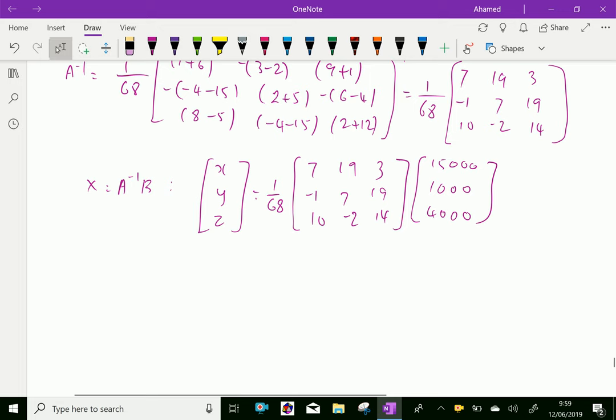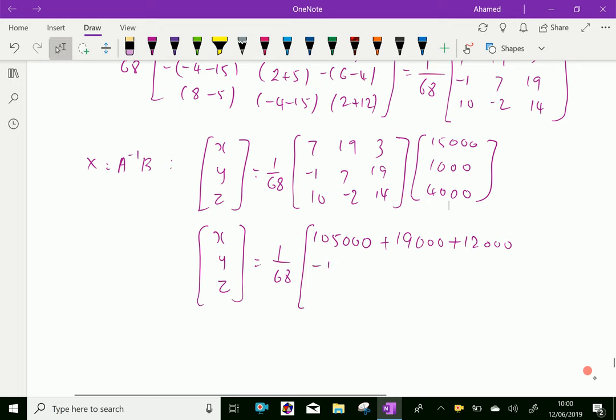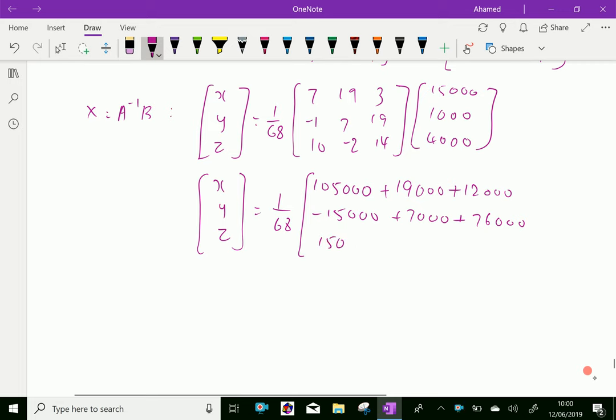We'll get, I can write, X, Y, Z, 1 over 68, 7 into 15,000, 9 into 1,000, 19,000, and 3 into 4,000, which gives 105,000 + 19,000 + 12,000. Second row is -15,000 + 7,000 + 76,000. Third is 150,000 - 2,000 and 56,000.